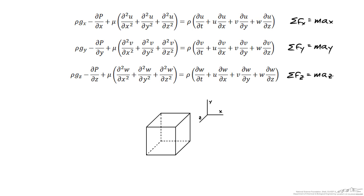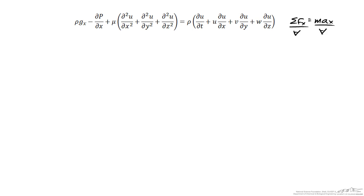For this screencast, let's deal only with the x direction. The same mathematics would apply for the y and the z directions, but we will leave it with the x direction to save time. The x component of velocity for a fluid we will call lower case u, and strictly speaking u could be a function of x, y, z, and time.